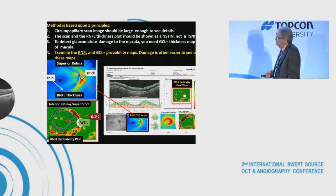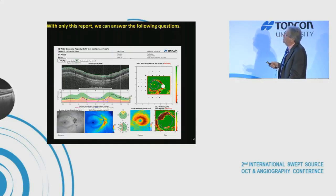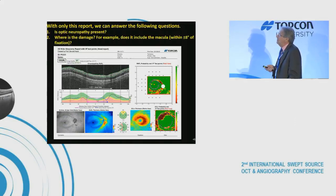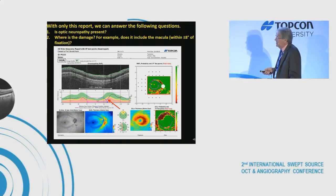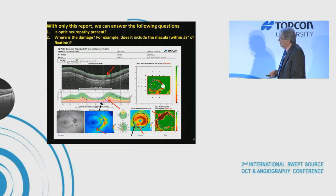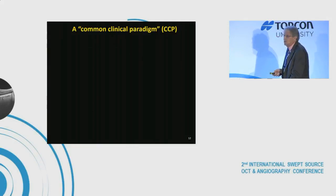With only this report, we can answer key clinical questions: is optic neuropathy present, and where is the damage — does it include the macula? In this case, there's macular damage dipping close to fixation, which may or may not appear on a 24-2. You can see it in the instant plot, in the probability map in field view, in the thickness map, and in the RNFL probability map.